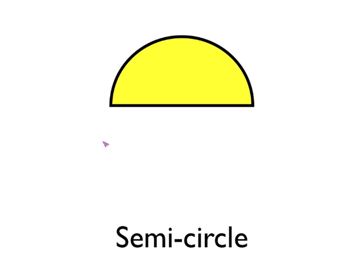Half of a circle is called a semicircle. So this shape here is called a semicircle.